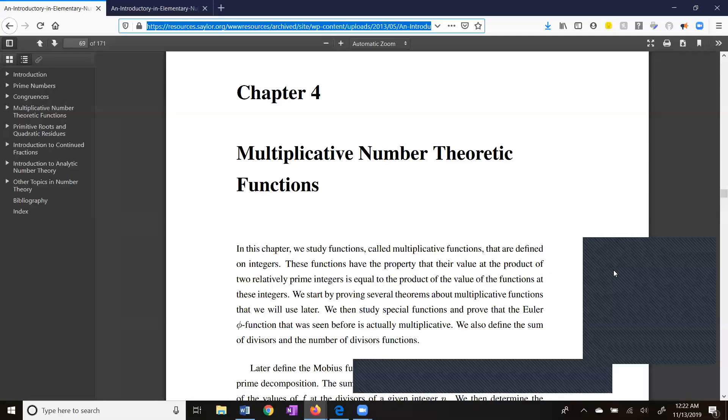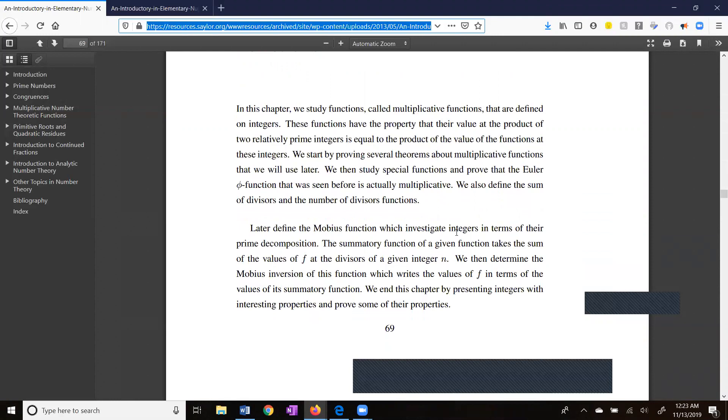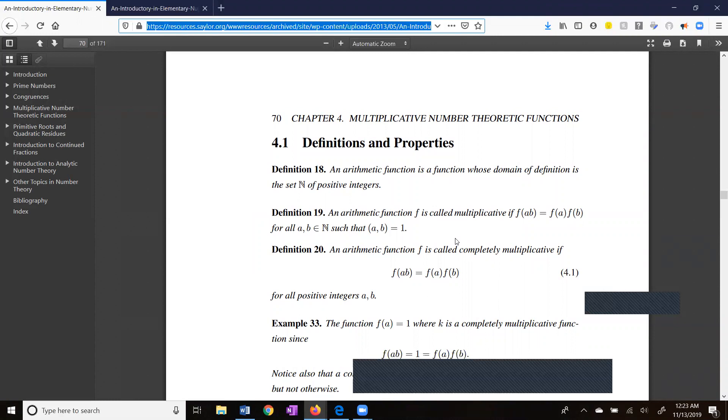Here in chapter four they talk about what we mean by a multiplicative function. In section 4.1, definition 19 says an arithmetic function. Well first, what's an arithmetic function? An arithmetic function is a function whose domain is the set of positive integers, the natural numbers. So your inputs are numbers like one, two, three, four, five. No fractions, no negatives.